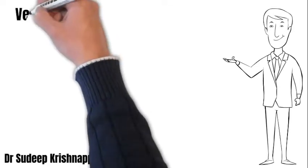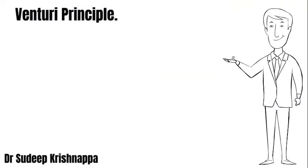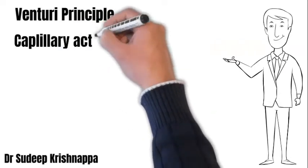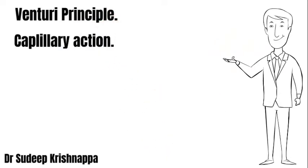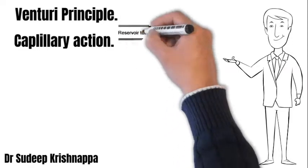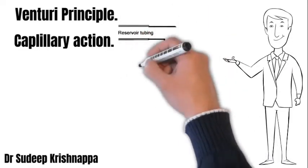The nebulizing chamber is the most important component of this device. This is the site where two key physical principles come into play to make sure the device functions properly. The first one is the Venturi principle and the second one is capillary action. This line diagram represents the internal components of a nebulizing chamber.